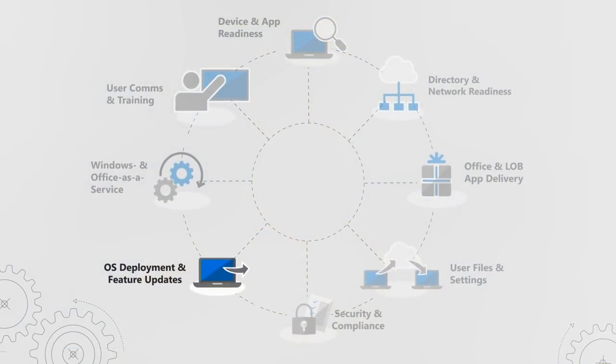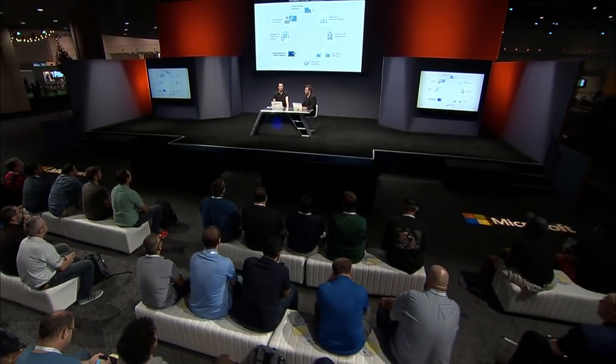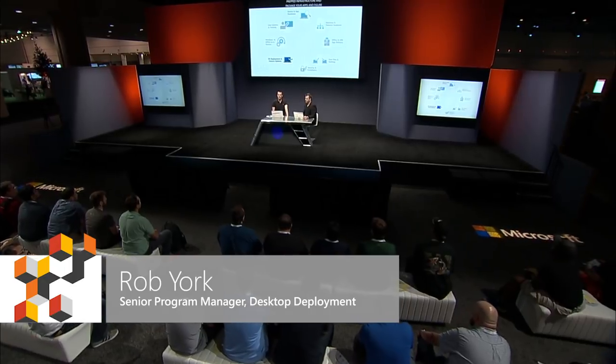We're reinventing the wheel — the MDT wheel — to help walk through the main tasks of a desktop deployment. For a lot of people this will be their existing processes incorporated into the wheel, but also some new tools and guidance to help them make it easier to shift. Once you've inventoried your device and app readiness, prepped your infrastructure, packaged your apps, and figured out user state, you're ready to start deploying your new version of Windows. If you want to go fast with Windows, you've got to go fast with Config Manager — that remains true today.